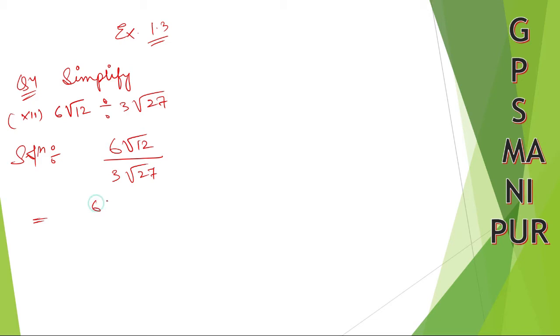So 12 I can write down like this, right? 2 times 3, 2 times 2 times 3. No, 2 times 2 times 3.